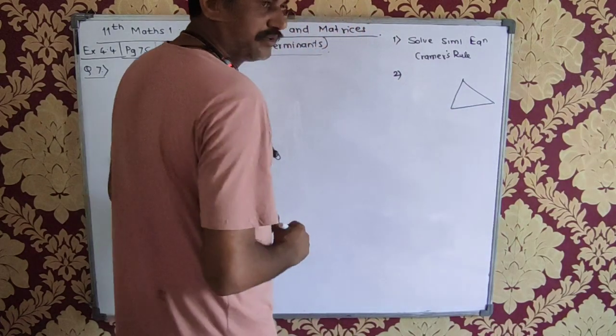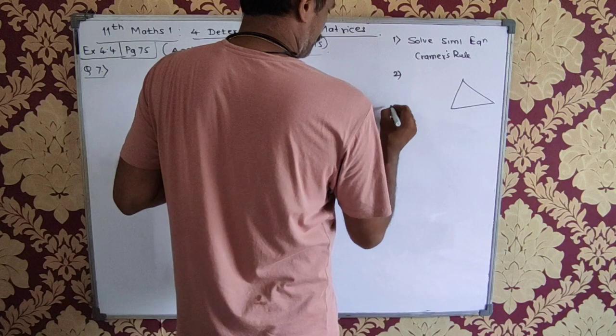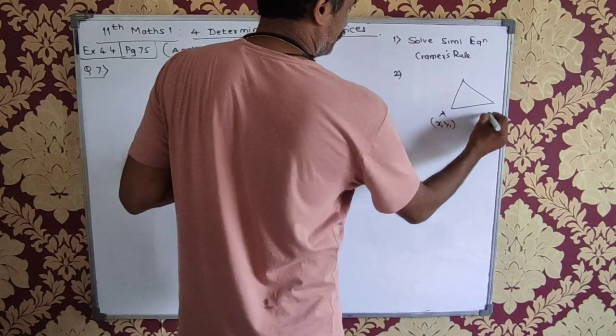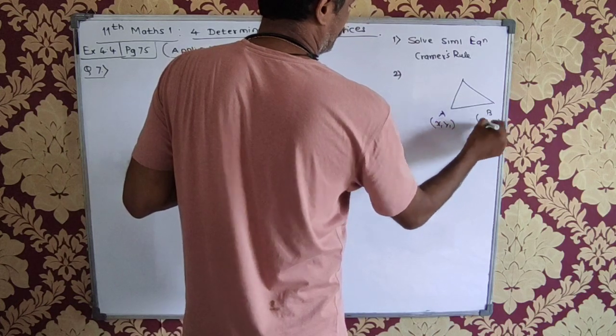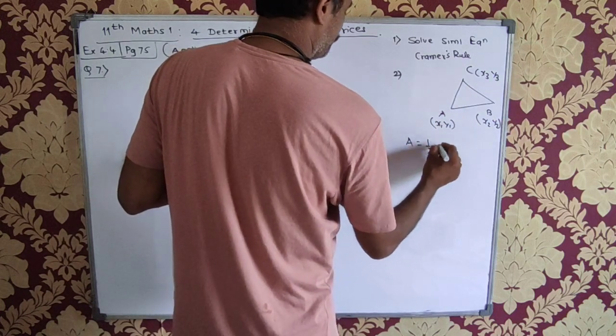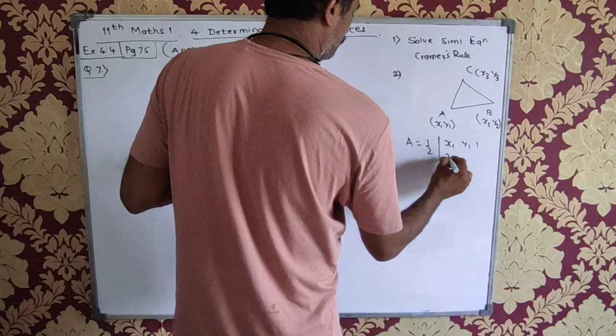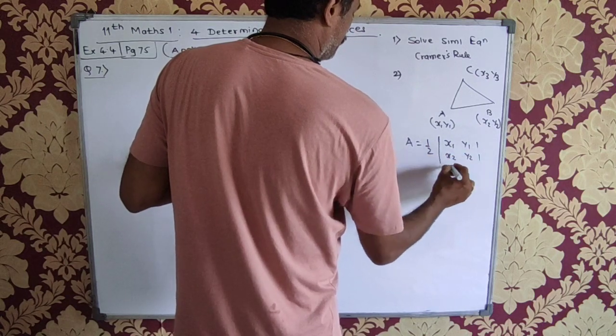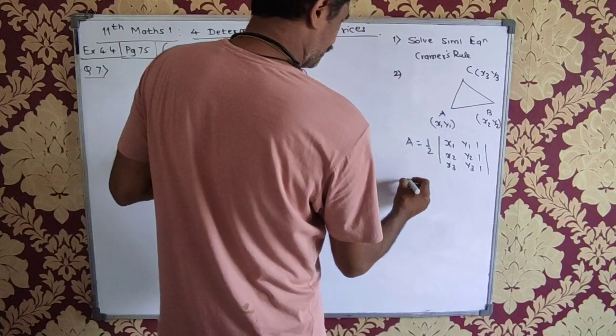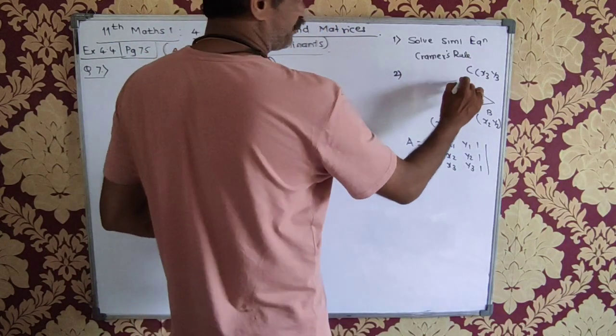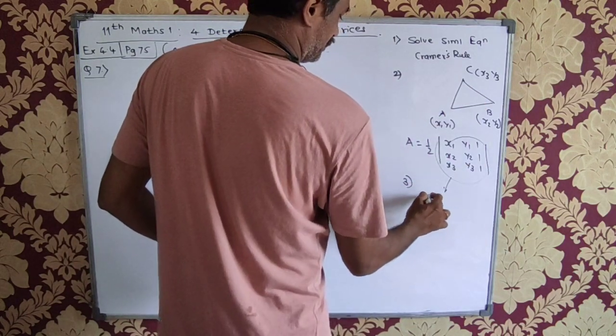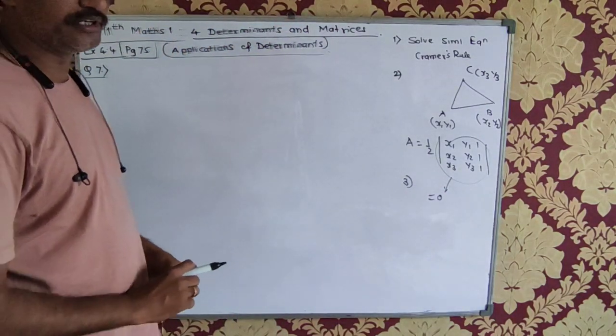The second application was to find out the area of the triangle. So here we know that this is point A coordinates x1, y1, B coordinates x2, y2 and C coordinates x3, y3. And the area of this triangle is given by half determinant x1, y1, 1, x2, y2, 1 and x3, y3, 1. The same thing can be checked to verify whether these points are collinear or not. If this determinant is equal to zero, then these points are collinear.